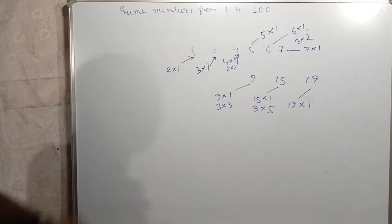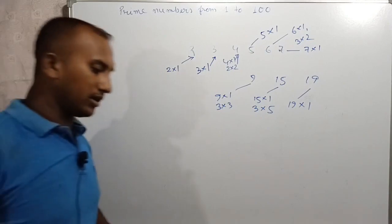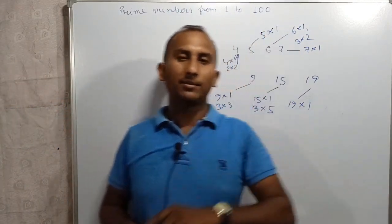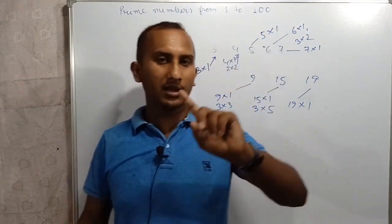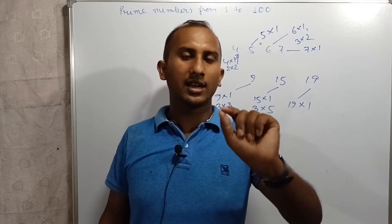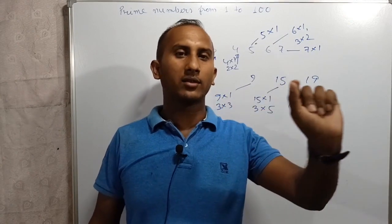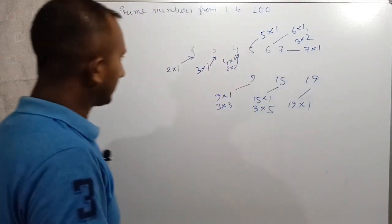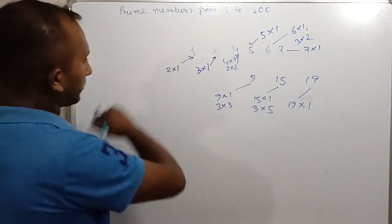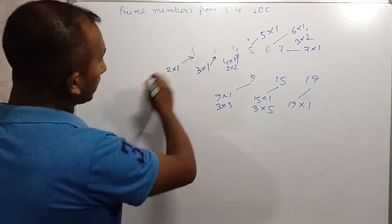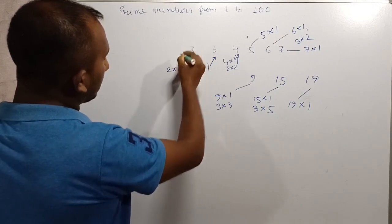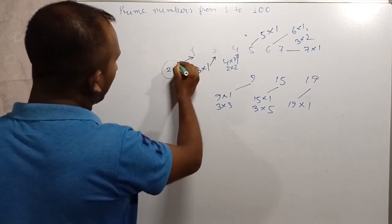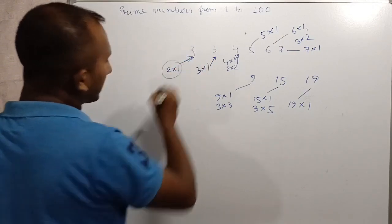So I would like to ask: which of these numbers will have only two factors? The number 2, 2, 2 — natural number multiply.